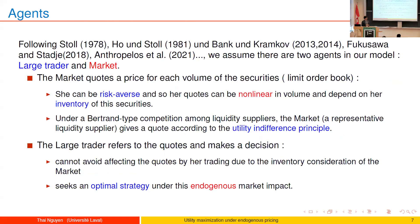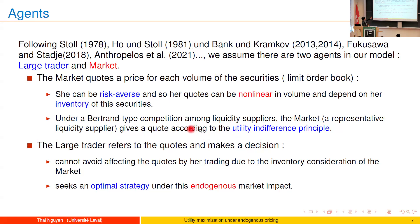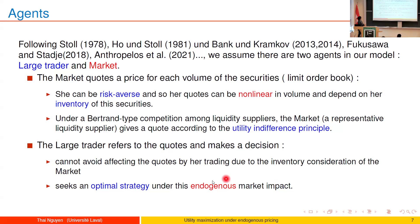We have two agents, following the prior setting. The market maker quotes a price for each volume of the security — keeping the limit order book literature in mind. The market maker can quote any price that is nonlinear in volume and depends on her inventory. However, if we assume Bertrand-type competition between liquidity suppliers, we can assume that the representative liquidity supplier quotes according to the utility indifference principle.